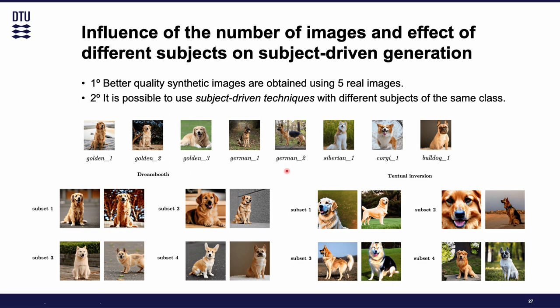For subset number one, we take the golden retriever dogs and apply Dreambooth and Textual Inversion to get the generated images. Then we use the subset of golden retrievers plus German shepherds, then add the Siberian husky for number three, and the corgi and bulldog for subset number four. As we can see, it is possible to use subject-driven techniques with different subjects of the same class.